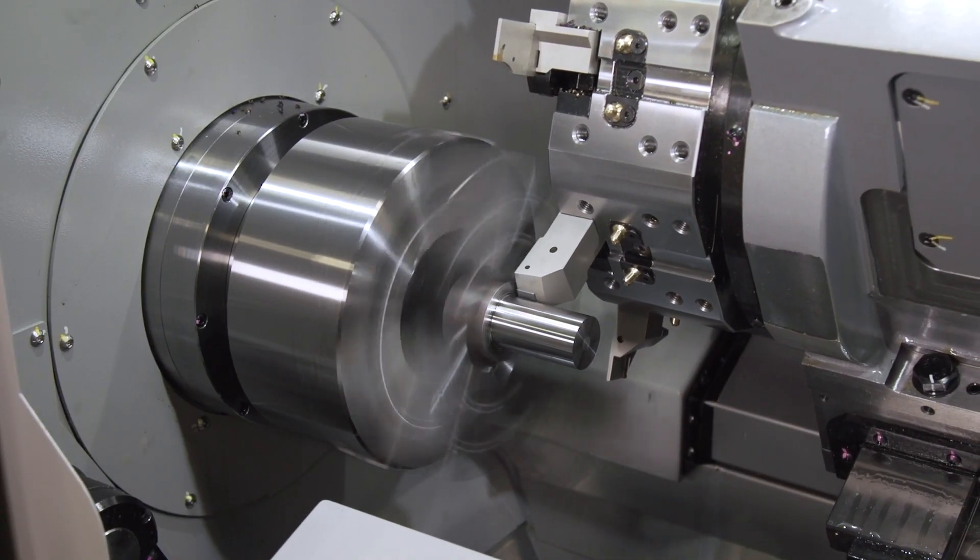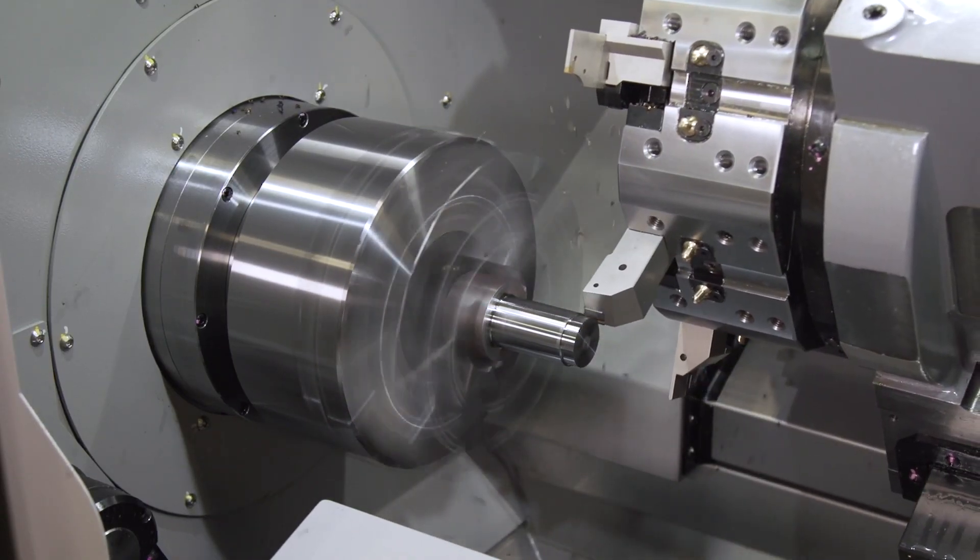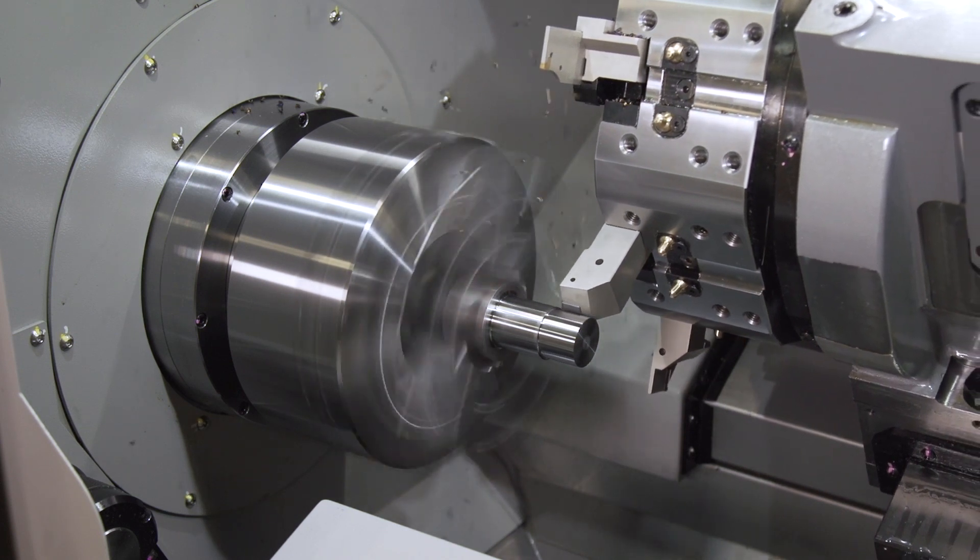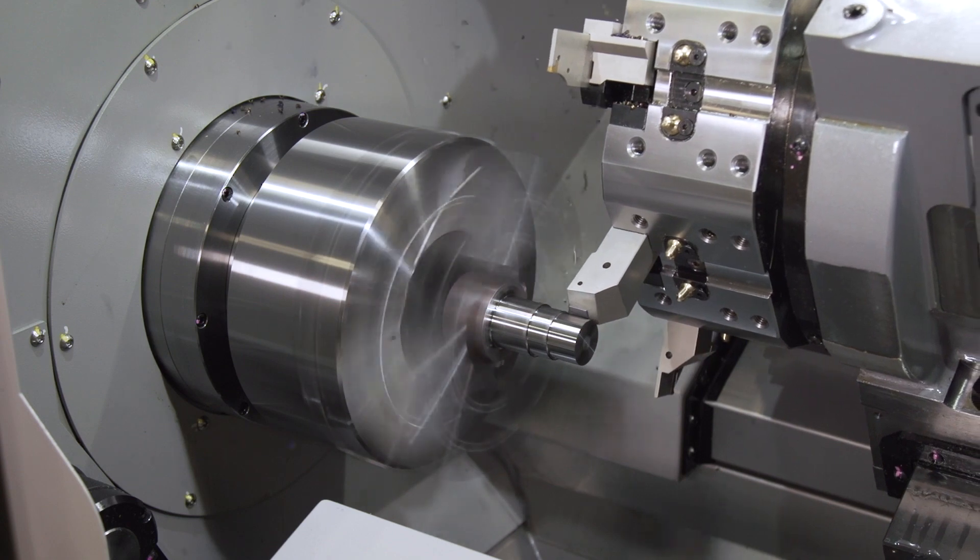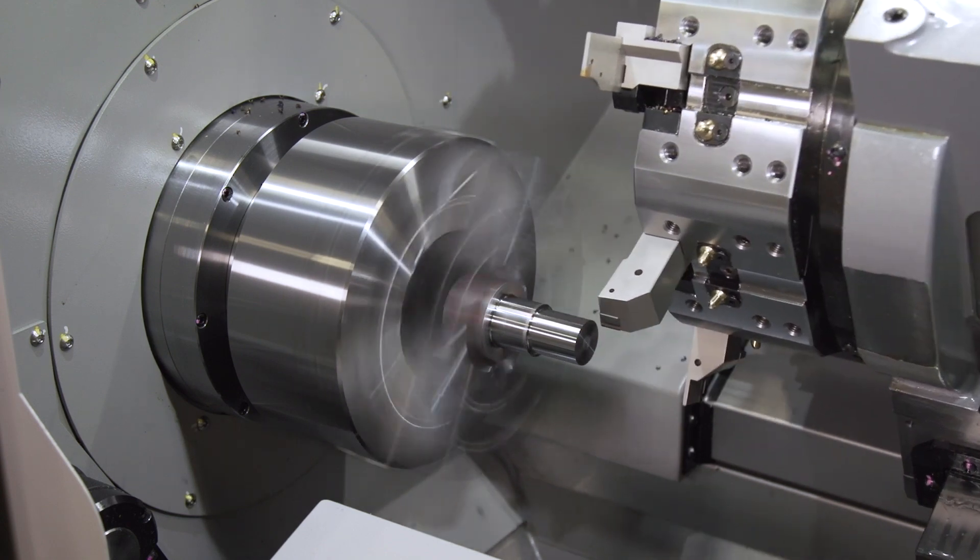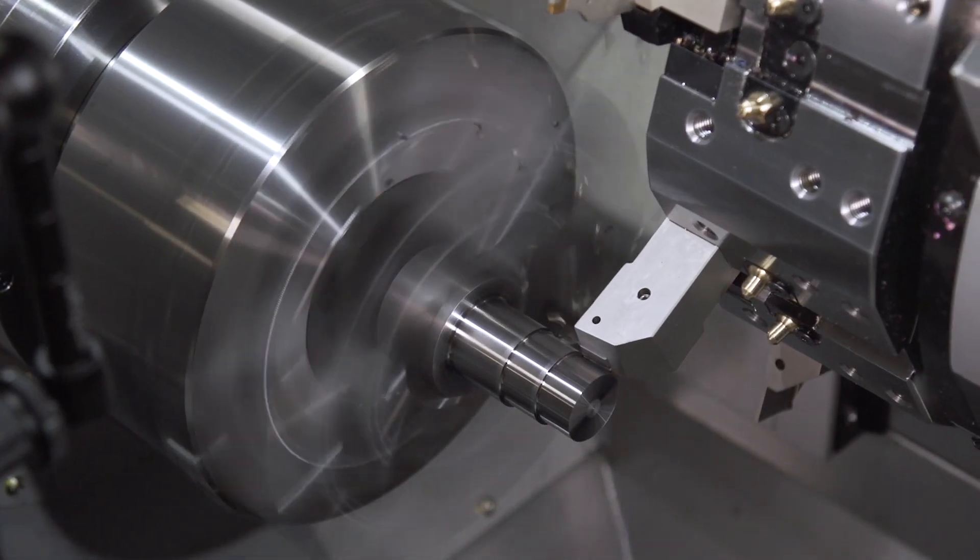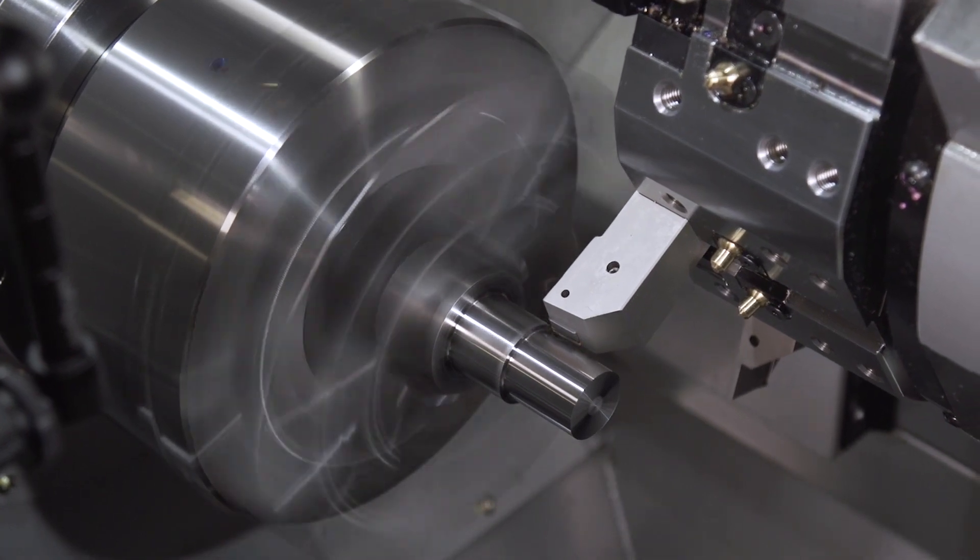The second method of thermal compensation is achieved with a micro switch on the top of X-axis travel. Although this method only compensates the X-axis, it is a directly measured value and inherently is more exact. This method can be used to hold very critical diameters.